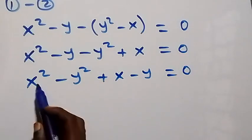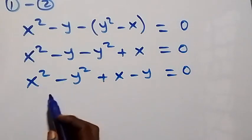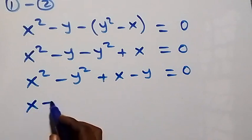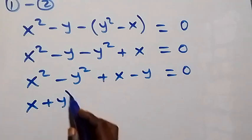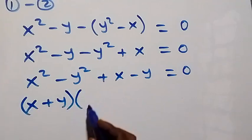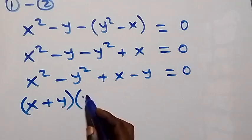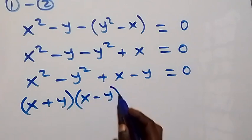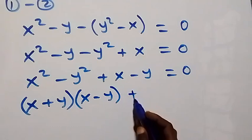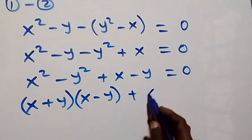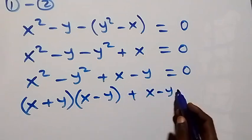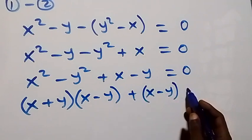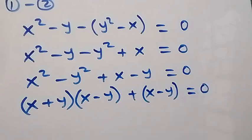And here we can rewrite x squared minus y squared as the difference of two squares, that is x plus y, into brackets x minus y, then plus x minus y, which we can also put in brackets, which equals to 0.